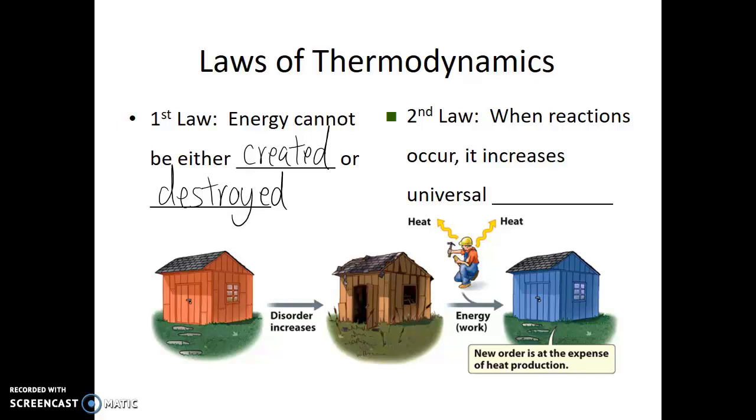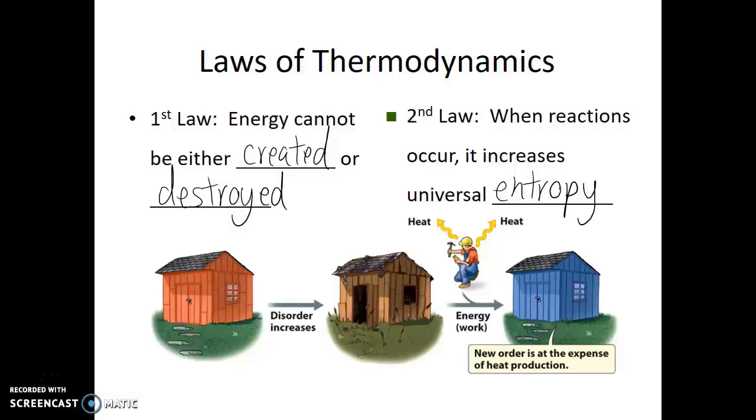The second law of thermodynamics is that when chemical reactions occur, the net result is that it increases universal entropy. This term entropy means disorder or disorganization. As an example, on the bottom of this slide, we see that a tool shed was constructed. It was built, organized, looks great. Then nothing is done to maintain the tool shed for many years. It's just allowed to sit, exposed to the elements. What we see is that disorder increases. The window's fallen out, the shingles are coming off, the door is open, the paint's peeled off.